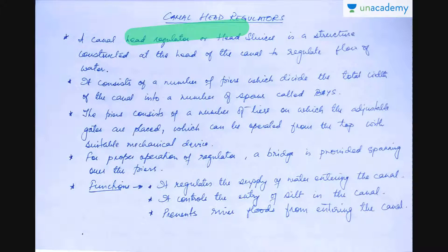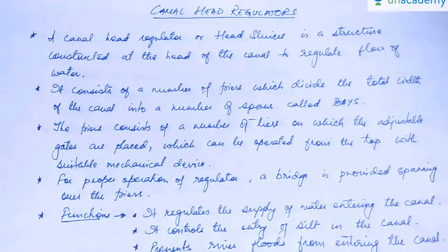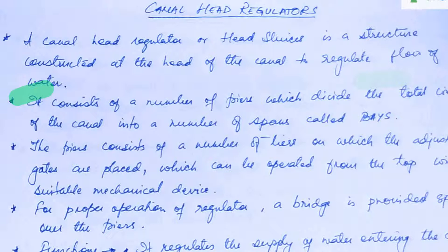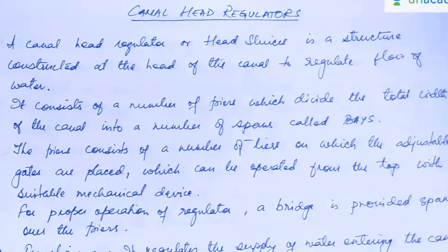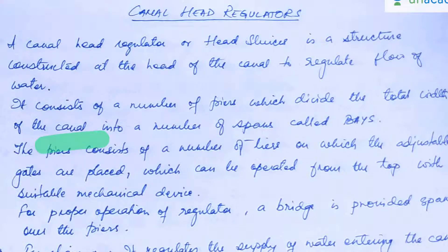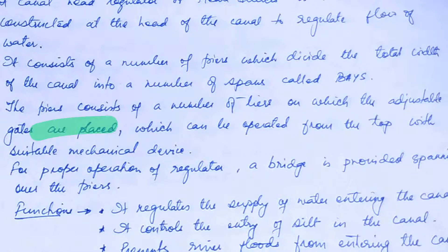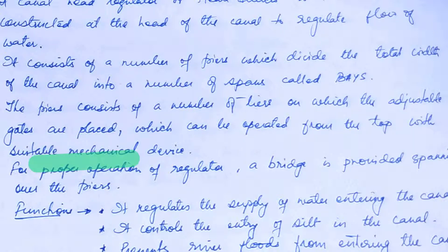Now let's see the canal head regulators. A canal head regulator, or head sluice, is a structure constructed at the head of the canal to regulate the flow of water. It consists of a number of piers which divide the total width of the canal into a number of spans called bays. The piers consist of a number of tiers on which adjustable gates are placed, which can be operated from the top with suitable mechanical devices.